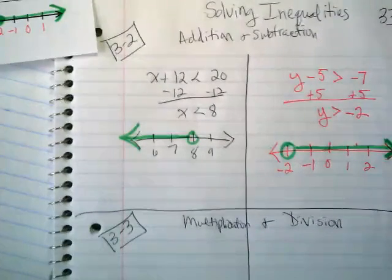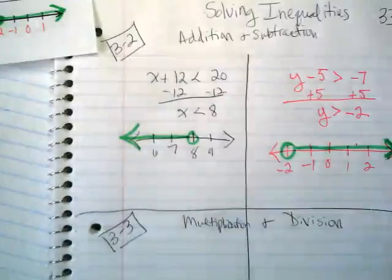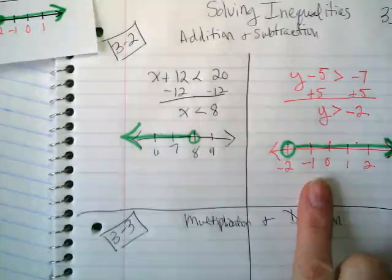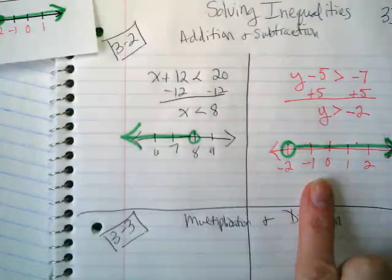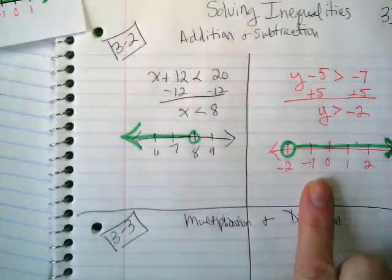And we have the golden rule, which we'll get to in our next examples. Because both of these are addition and subtraction. Are we multiplying or dividing here? No. When we get to multiplying and dividing, that's when it gets a little bit more interesting.